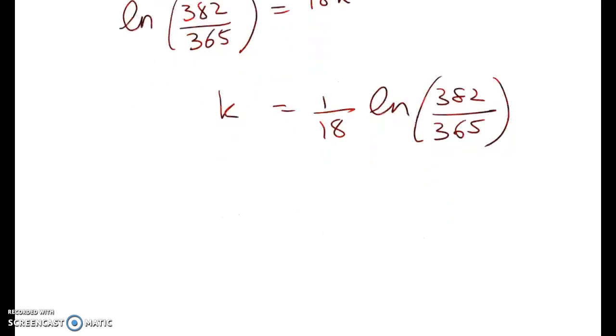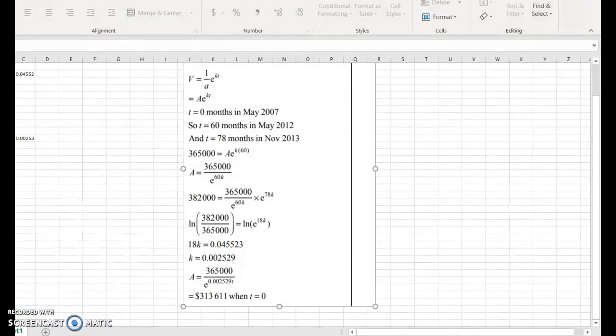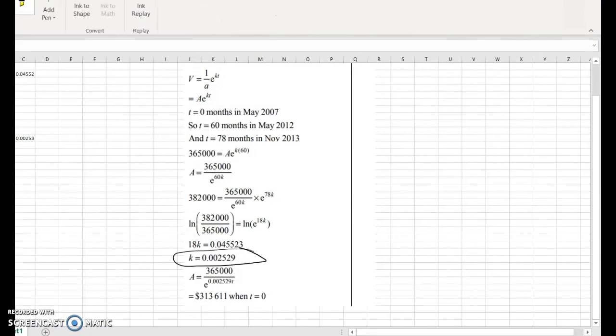Right now when you put that in your calculator you're going to get a very small number. I'm going to cheat and just hop to the Excel spreadsheet that I did it in because my calculator is at school. So k equals, let's see, well there's the schedule. So k works out to be this number here and that's what I got as well. So 0.002529.